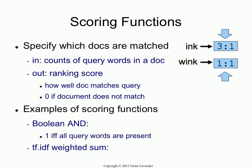What goes into the function is the document and the number of times query terms occurred in the current document, and what comes out is a score. You already know a couple of scoring functions from the first coursework. Coordination level matching or word overlap counts how many terms are in common between the query and the document. TF-IDF weighted sum produces a score that tells you how well the document matches the query. Cosine computes the angle between the query vector and the document vector.